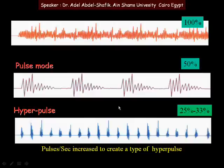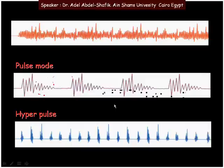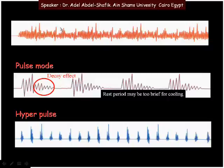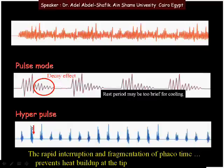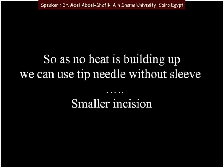This gives a total reduction in the amount of ultrasound delivered. With continuous ultrasound, heat builds up significantly. With regular pulses, there is some time for cooling, but the decay of the pulse is gradual, so there may not be enough cooling time. In hyper pulse mode, there is an abrupt end to each pulse and enough time for cooling, which prevents heat from building up at the tip. Because there is no heat buildup, we can use the tip needle without a sleeve, allowing smaller incisions and ultimately less astigmatism.